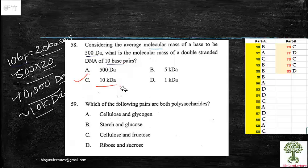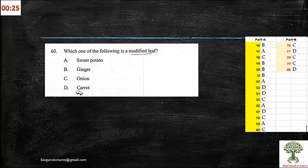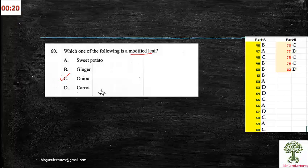59th one: which of the following pairs are both polysaccharides? Here you can say cellulose and glycogen, whereas all other ones are not exactly polysaccharides. Next, 60th one: which of the following is a modified leaf? As soon as you look at onion, you may get some clue for that, whereas the other ones are modified roots. Good, we have finished part A.